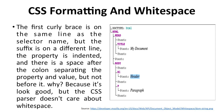Here we have HTML, then head, then title, and then text content. In that particular example, we can see that the first curly brace is on the same line as the selector name, but the closing brace is on a different line. The property is indented and there is a space after the colon separating the property and value, but not before it, because the CSS Parser does not care about white spaces.